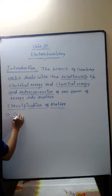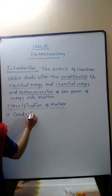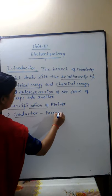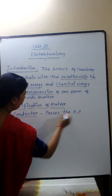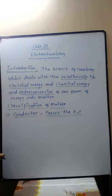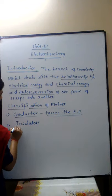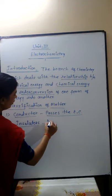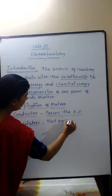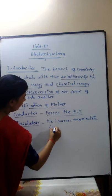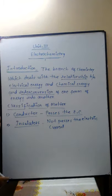On the basis of passage of electricity, substances are classified into three types. First is called conductor. Conductors are those substances which pass electric current through them. An example is metals. Second is insulators. Insulators are those substances which do not pass the current or conduct electricity.